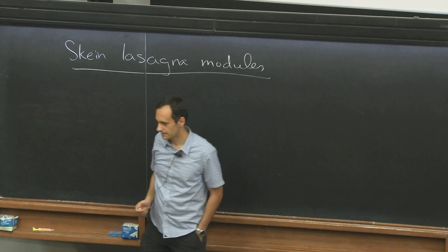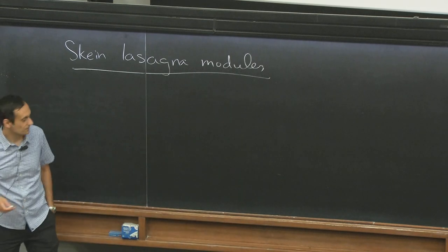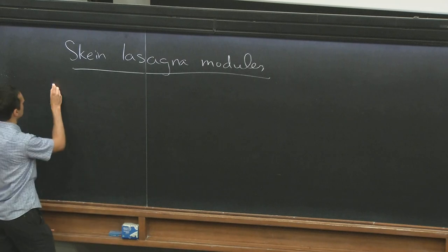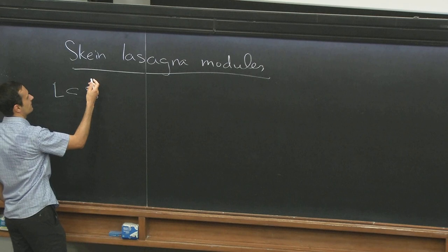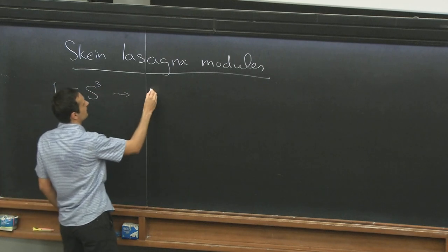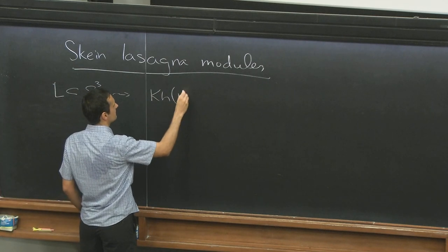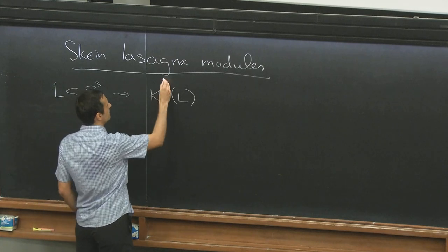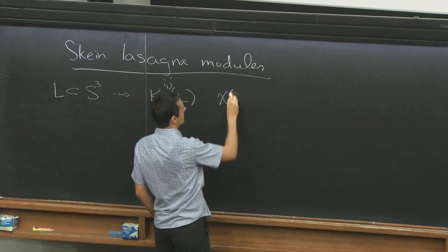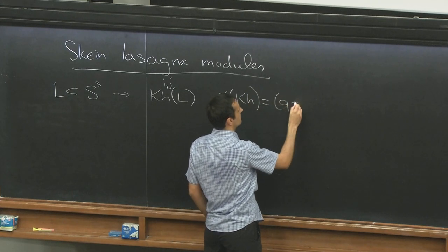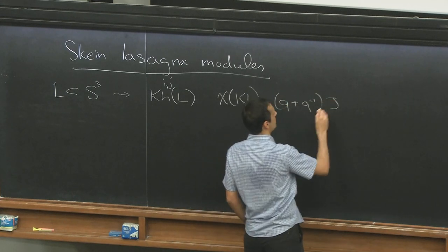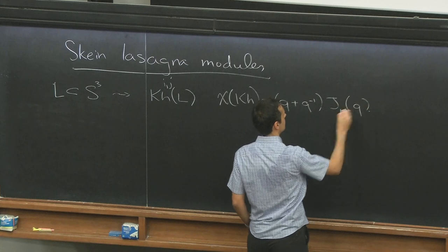which are some proposals for extending Khovanov homology to three manifolds. So let me first say a few words about Khovanov homology. If we have a link in S3, then there's this big graded theory whose Euler characteristic is q plus q inverse times the Jones polynomial of the link.